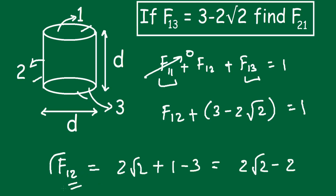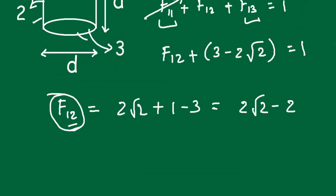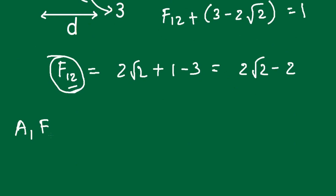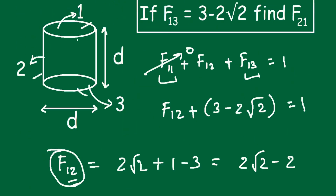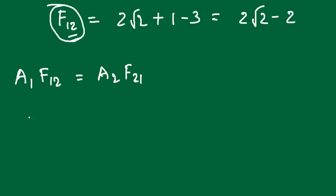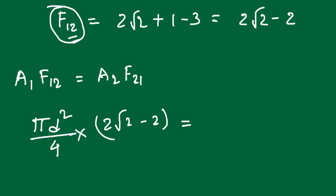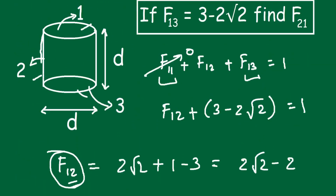Now that we have F12, we can find F21 using the reciprocity rule: A1 × F12 = A2 × F21. A1 is the surface area of the circular base, which is πD²/4. So (πD²/4) × (2√2 − 2) = A2 × F21. A2 is the lateral surface area of the cylinder, which is πDL. Since the length L equals D, A2 = πD².